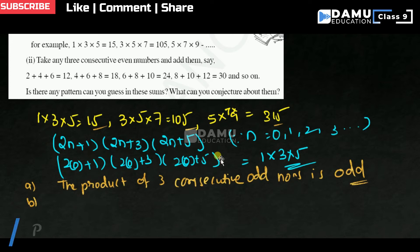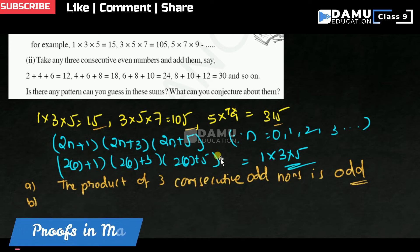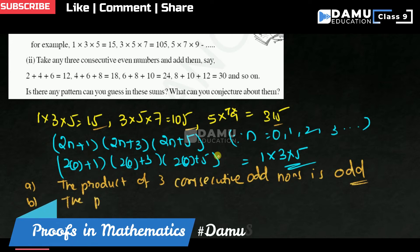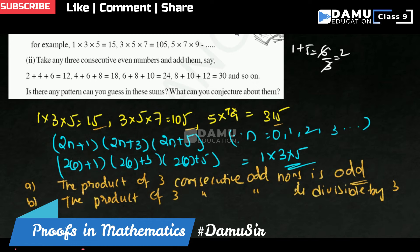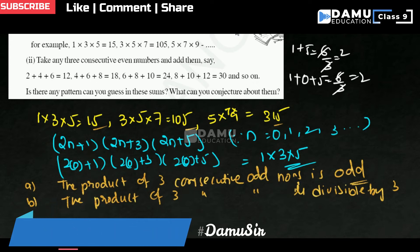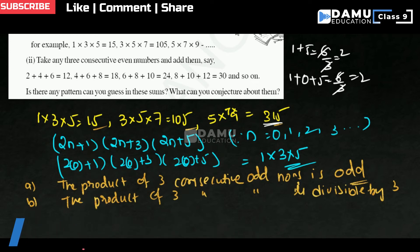Next conjecture: the product of any 3 consecutive odd numbers is divisible by 3. For example, 15 means 1+5=6, which is divisible by 3. The divisibility rule of 3 states: if the sum of all the digits is divisible by 3, then the given number is divisible by 3.